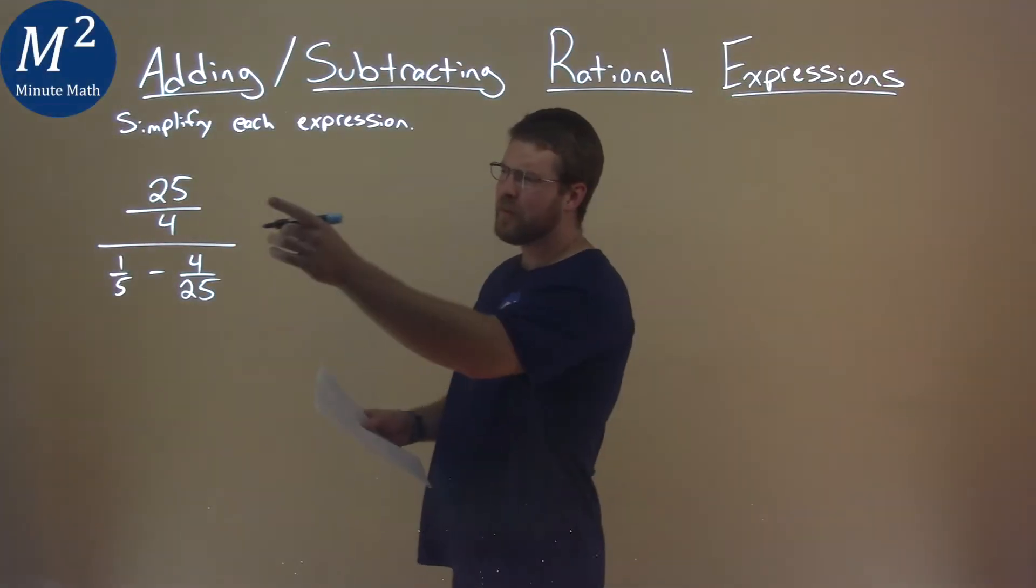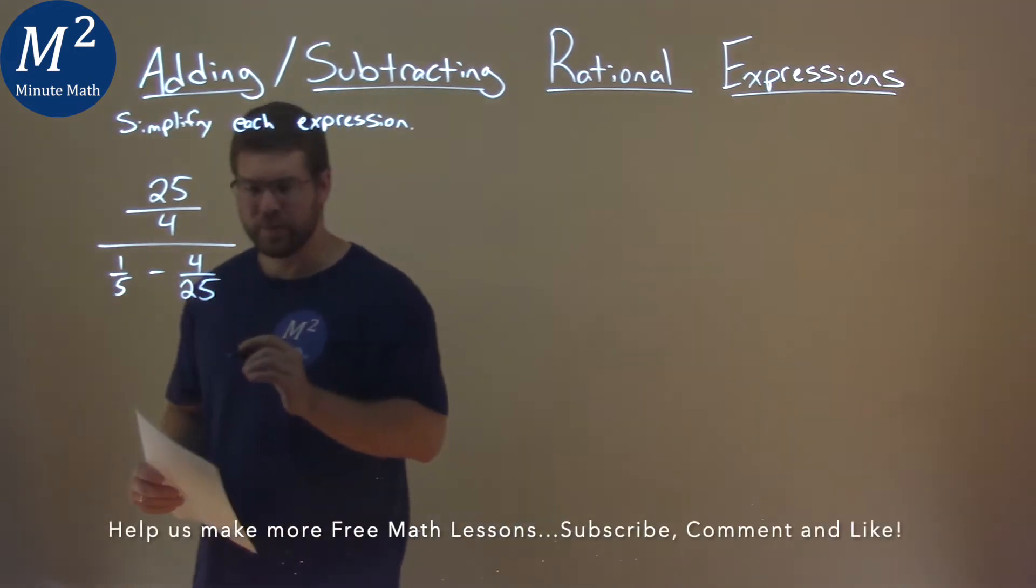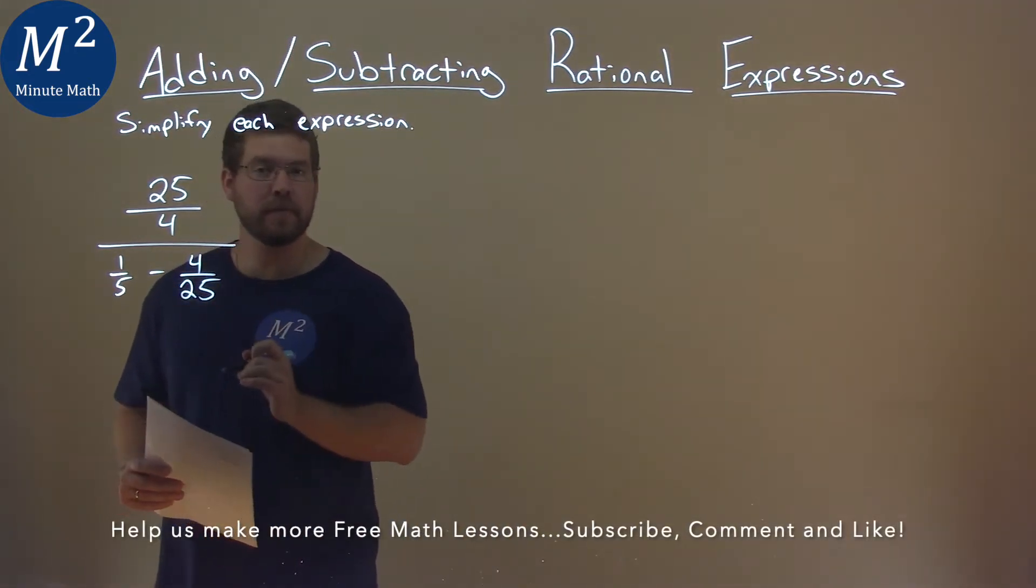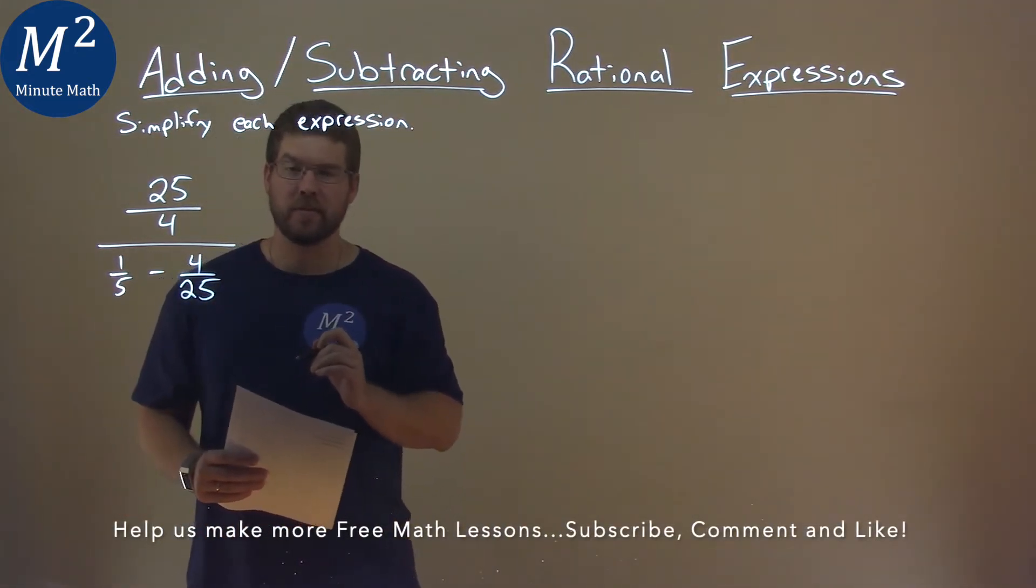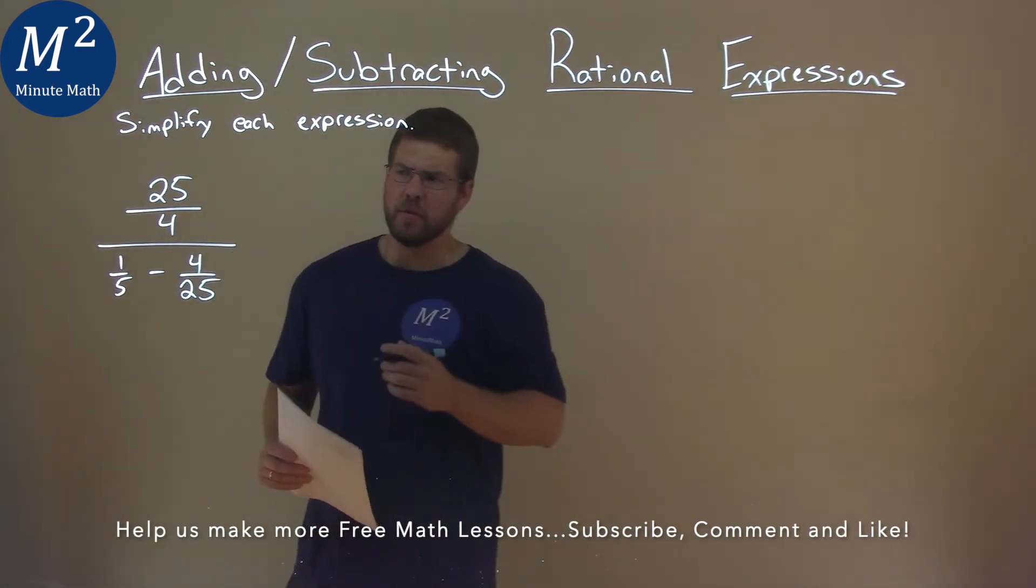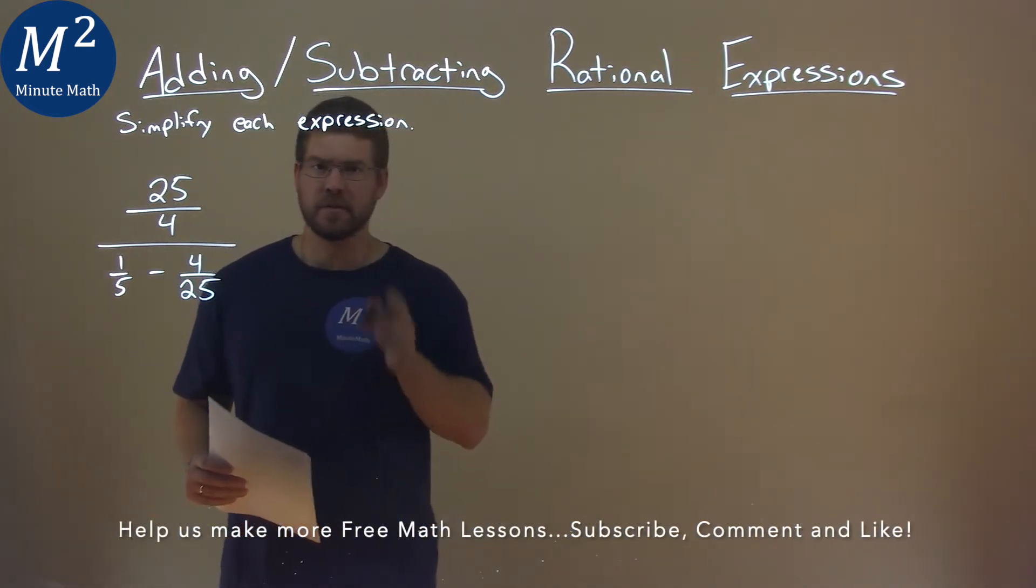We're given this problem: 25 over 4, over 1 fifth minus 4 over 25, and we've got to simplify this expression. Now this is a doozy of a problem, lots of fractions, but we can do it.